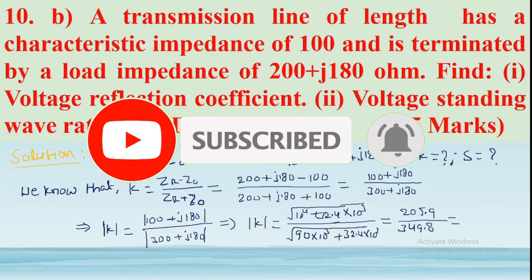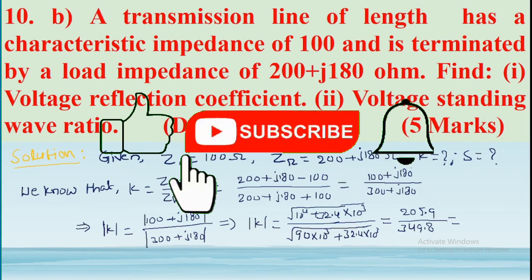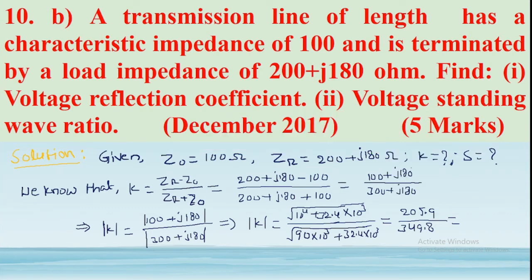Computing the numerator: square root of (100² + 180²) equals approximately 205.9. Computing the denominator: square root of (300² + 180²) equals approximately 349.8. Therefore, the magnitude of K is 205.9 divided by 349.8, which equals approximately 0.588.